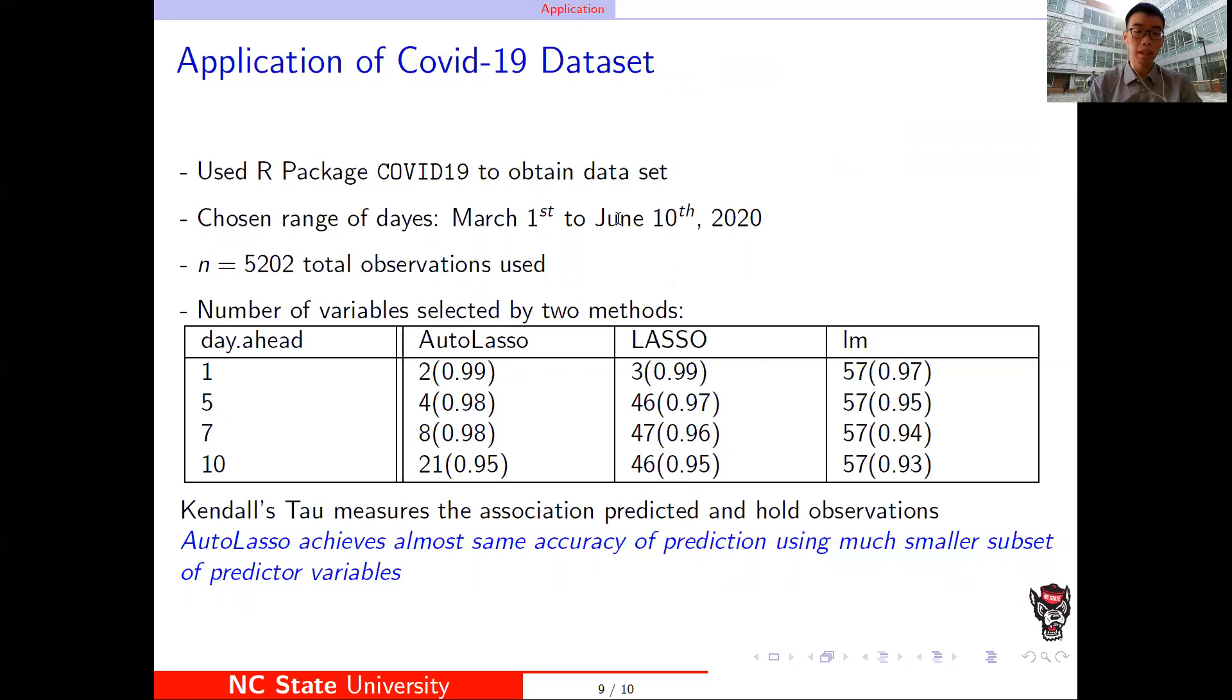We compared the one day ahead, five days ahead, seven days ahead, and 10 days ahead of COVID confirmed cases. You can see the AutoLasso method can select a smaller subset of predictors even with a high Kendall correlation. The Kendall correlation is to see the correlation between the response variable and the predict variables.